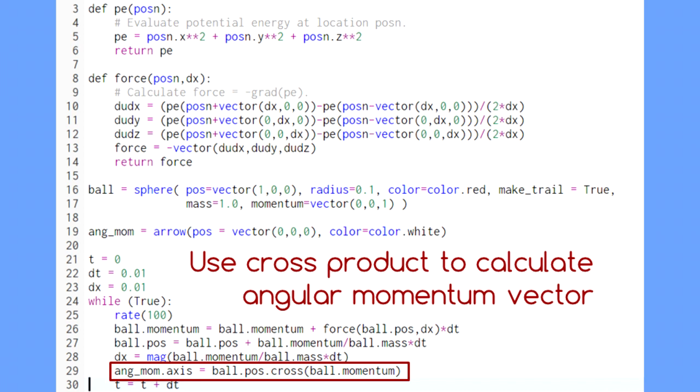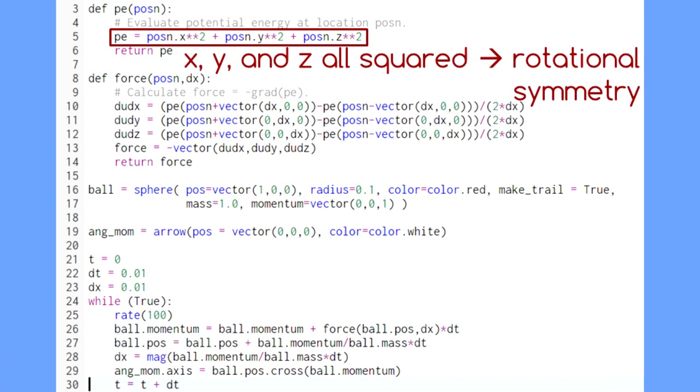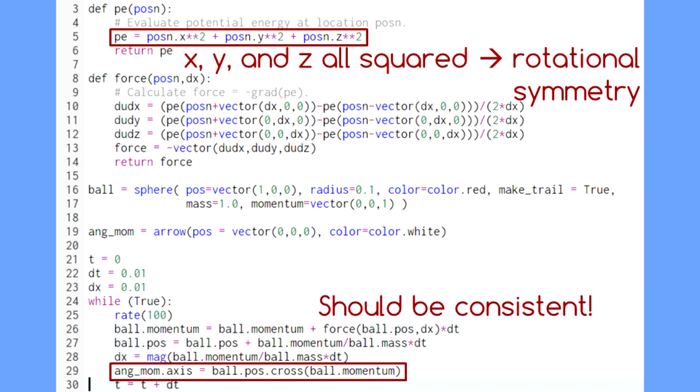For a review of the cross product, see the vPython for beginners episode linked in the description below. The spring potential energy we have in place exhibits rotational symmetry since it relates to x, y, and z in the exact same way. So this arrow should maintain the same length and direction.